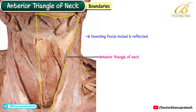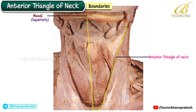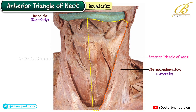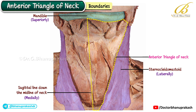Let's begin with the boundaries of the anterior triangle. Superiorly, it is limited by the inferior border of the mandible. Laterally, by the anterior border of the sternocleidomastoid muscle. Medially, by the midline of the neck running from the chin to the suprasternal notch.